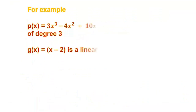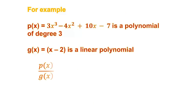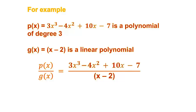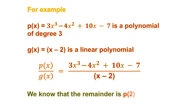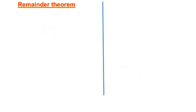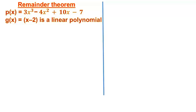Example: P of x equals 3x cubed minus 4x squared plus 10x minus 7 is the polynomial, and G of x equals x minus 2 is the linear polynomial. If we divide P of x, we get P of A. Now, using the Remainder Theorem to find the solution, P of x is the polynomial and G of x is the linear polynomial. If x minus 2 equals 0, then x equals 2.